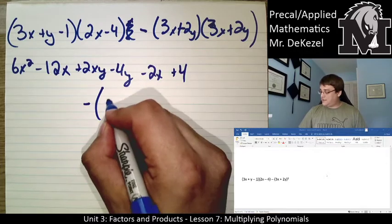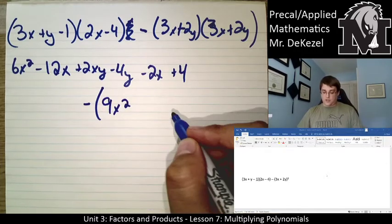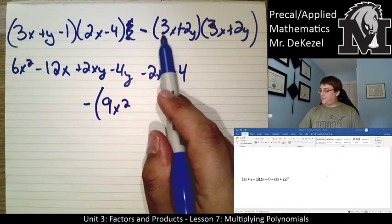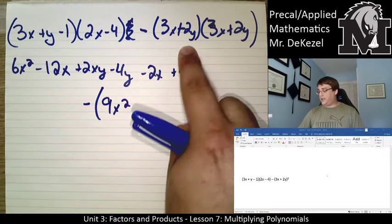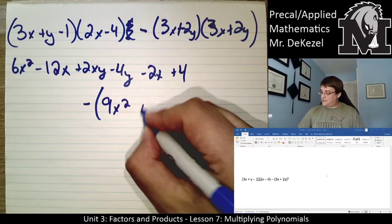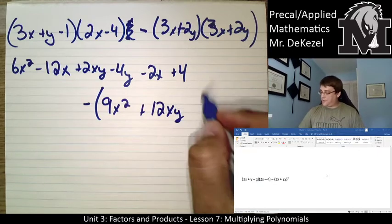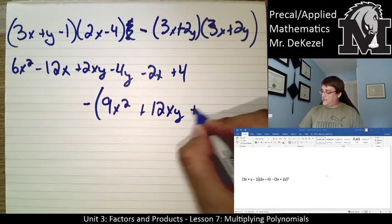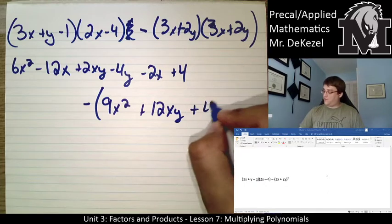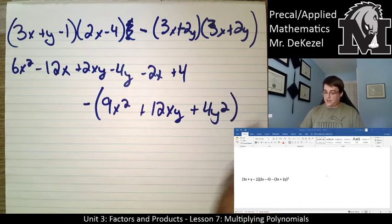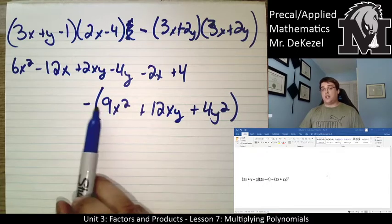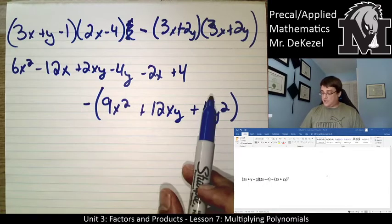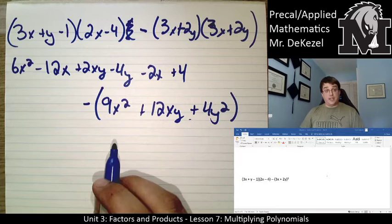3x times 3x is 9x squared. We are going to have 3x times 2y, that's 6xy, and we're doing it twice, so plus 12xy. And then plus 2y times 2y is 4y squared. Since this negative is through the entire brackets, that changes the sign for all of these. So we would need to rewrite that.